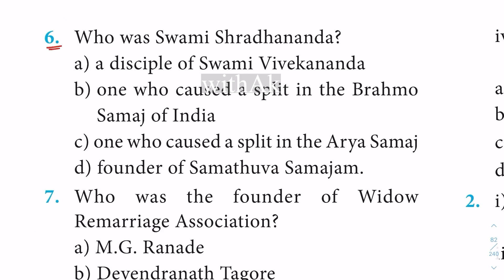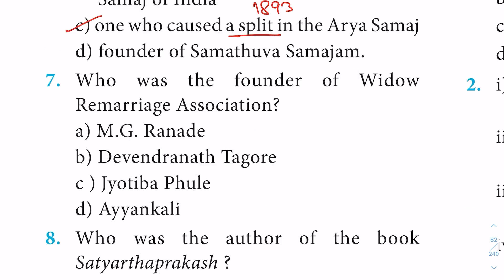Question 6: Who was Swami Shradhananda? Option C: One who caused a split in the Brahmo Samaj. The split happened in the year 1893.